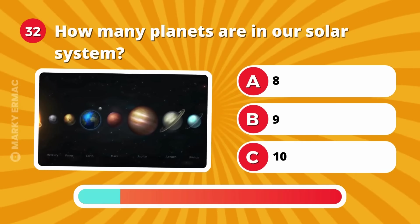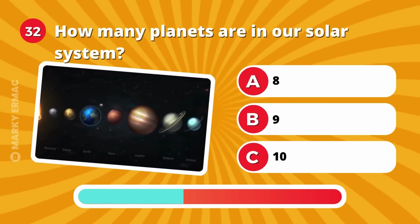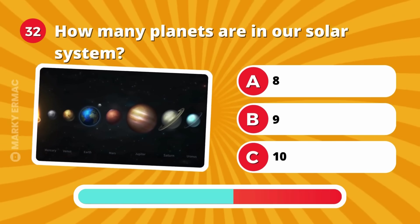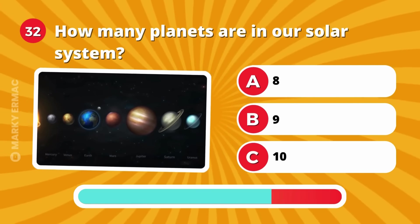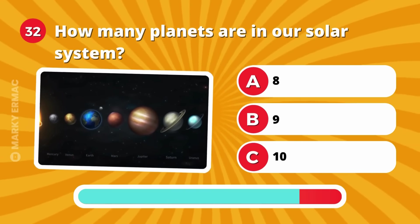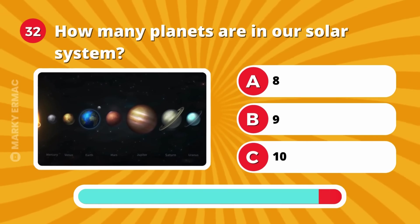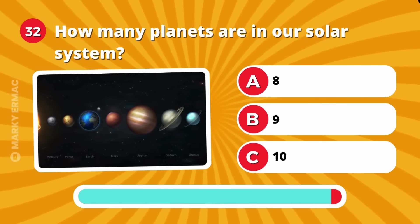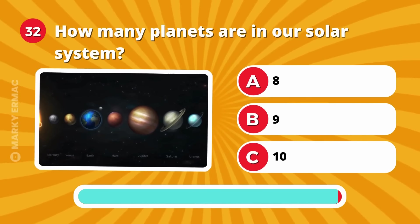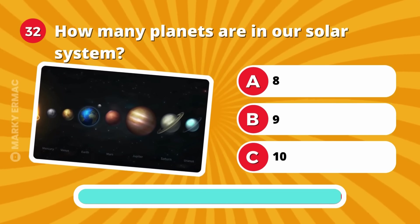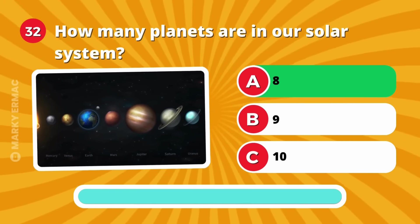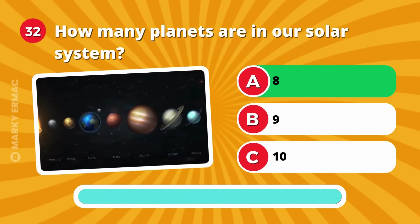How many planets are in our solar system? Eight, nine, or ten? It's eight!